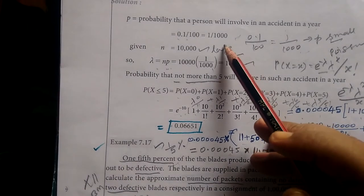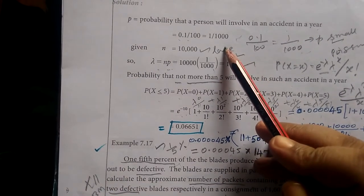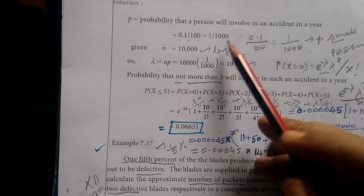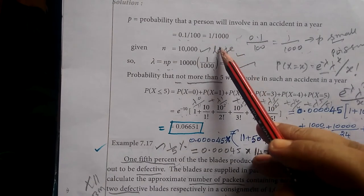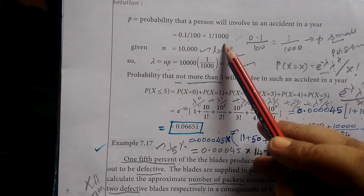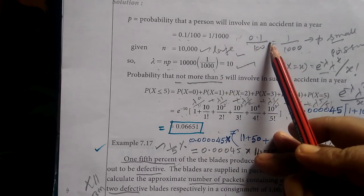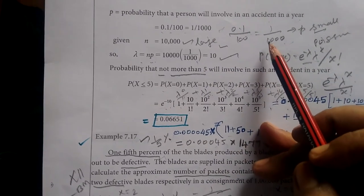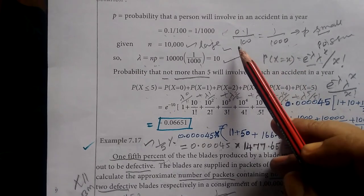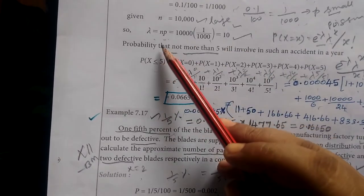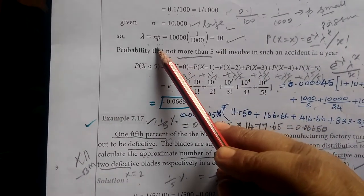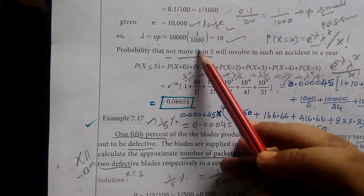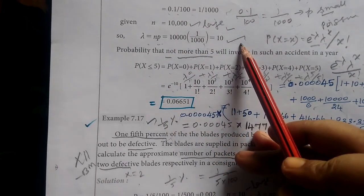It is given P equals 0.1%, which is 1/1000. N equals 10,000, so lambda equals np equals 10,000 times 1/1000 equals 10.